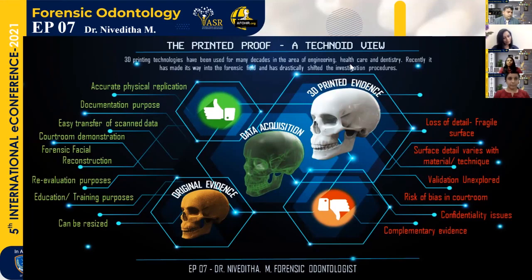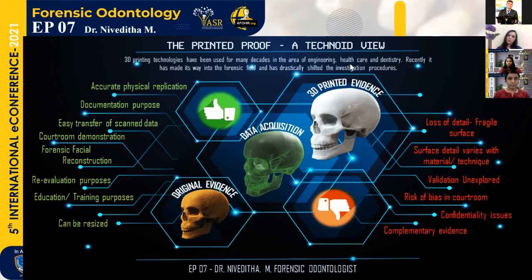The 3 skulls in the poster represent the process of 3D printing. The lower left one is the original evidence which is scanned by the 3D scanner, and then the image acquired or the data acquired is then printed into a 3D model which is used for the evaluation purpose.